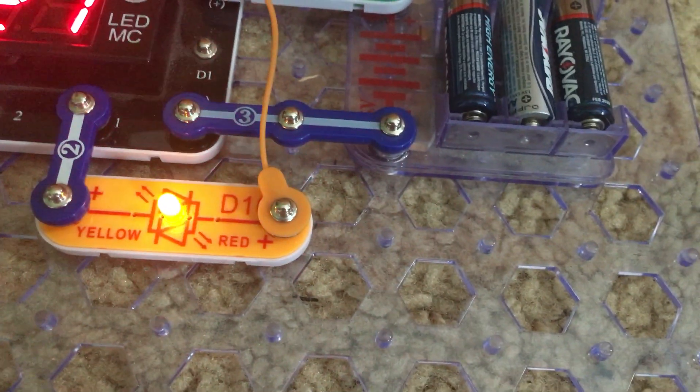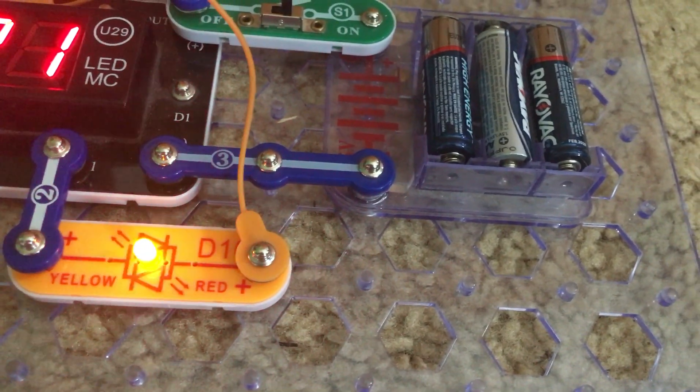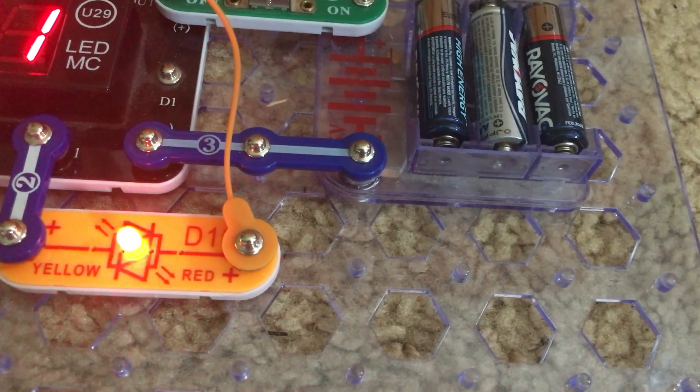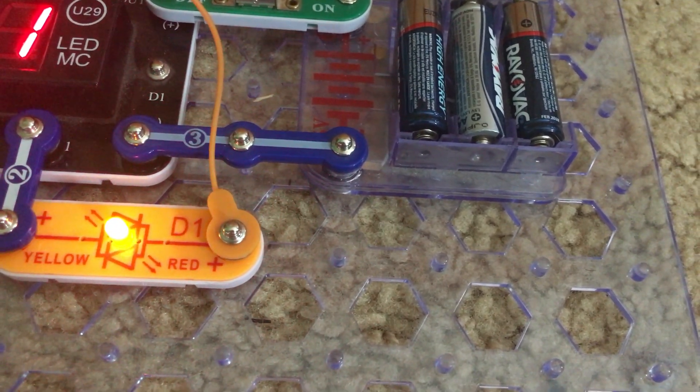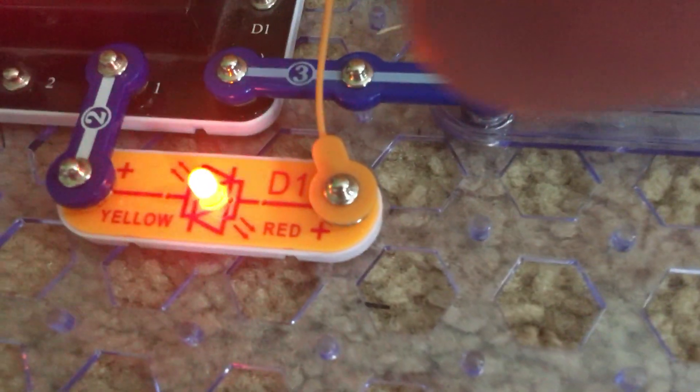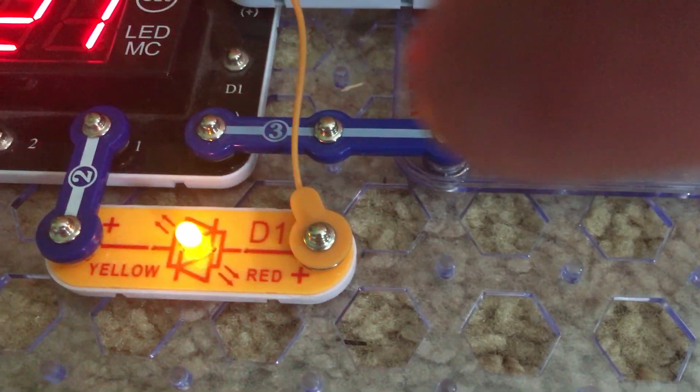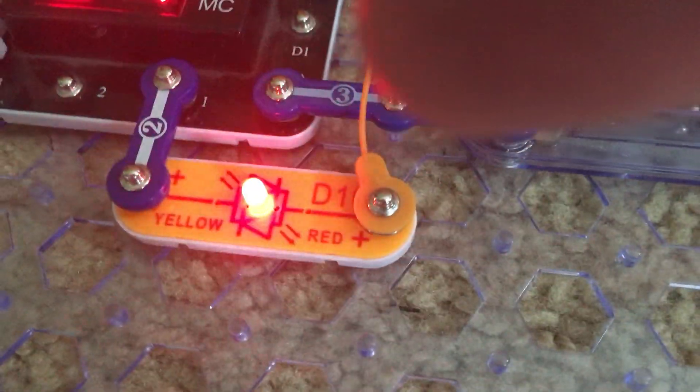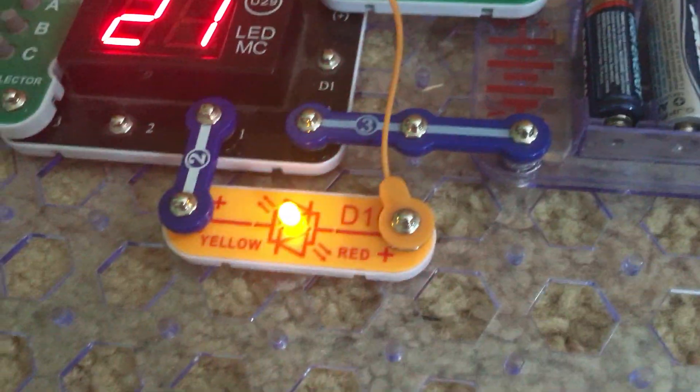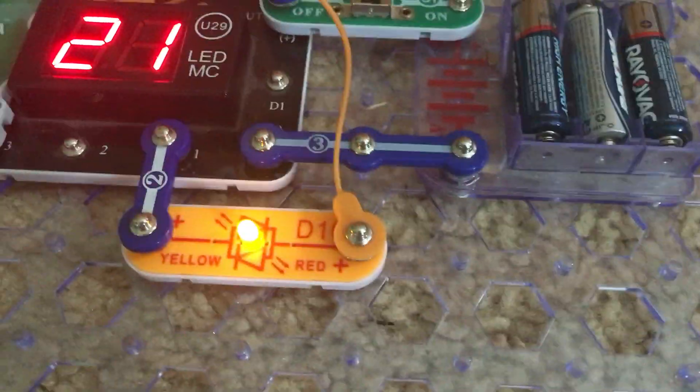Since current can only flow through a single direction in a diode, the faster the LEDs alternate, they may appear to be orange. My camera seems to pick up more yellow than red and certainly no orange, but you may notice that yourself.